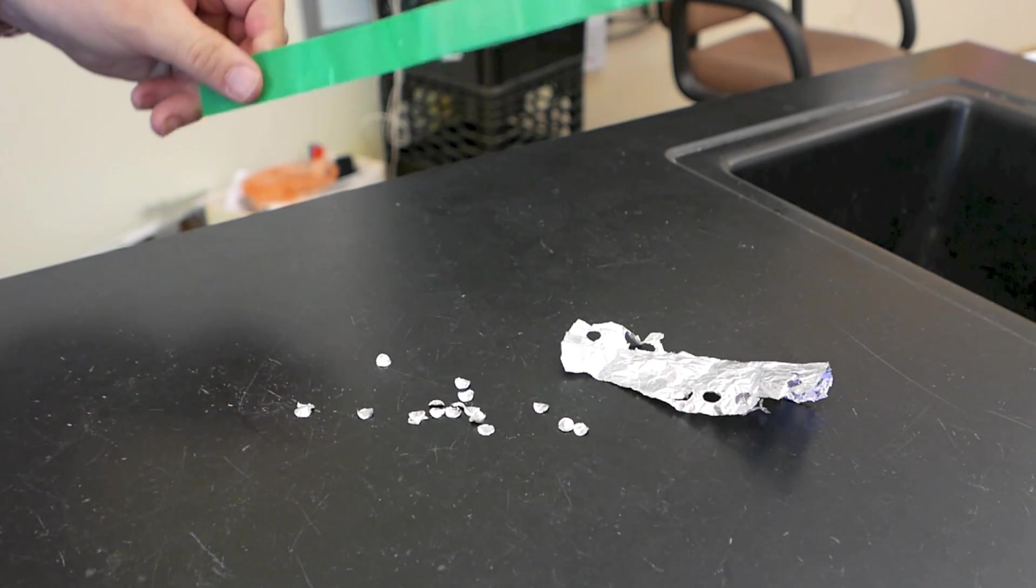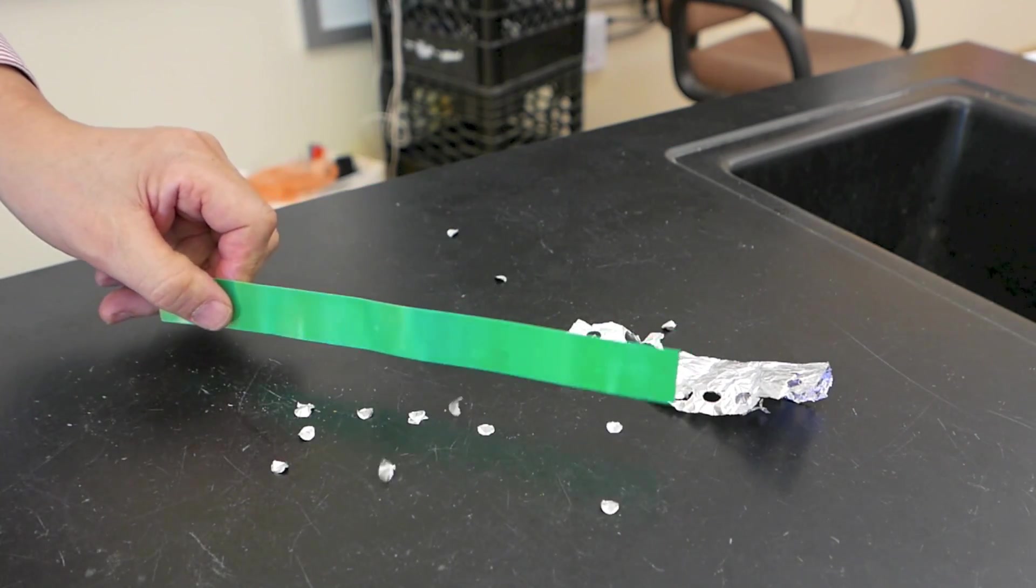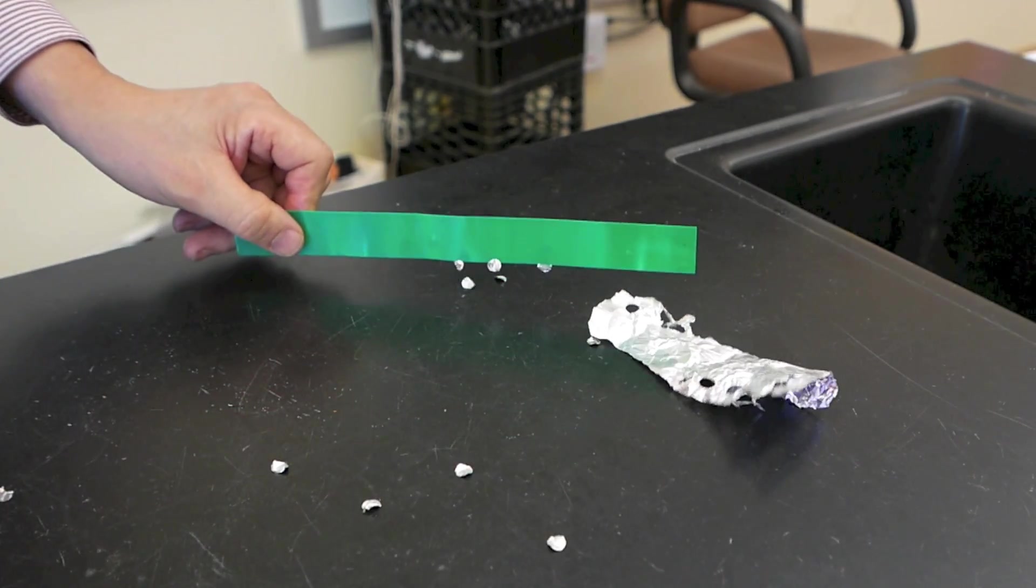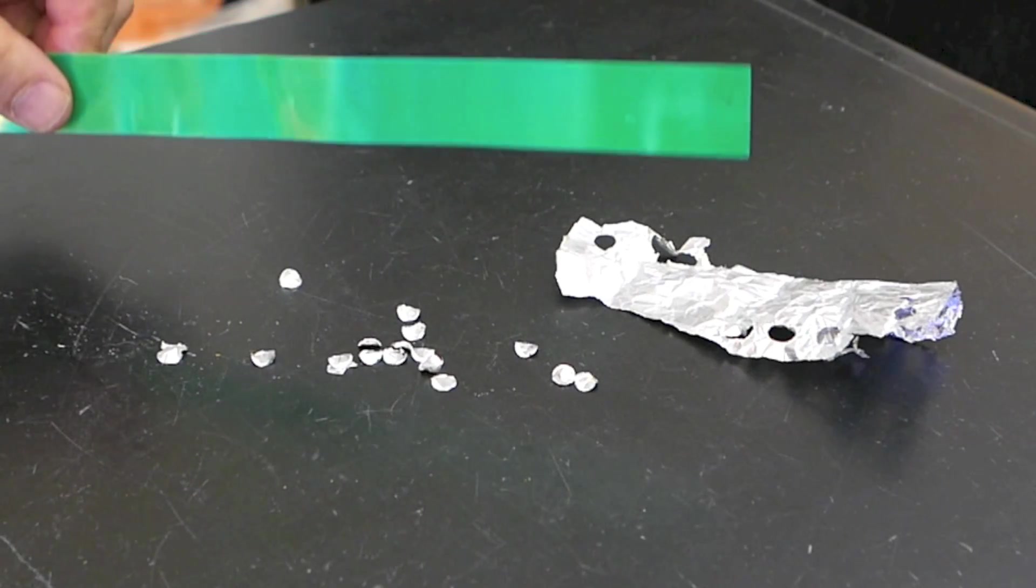Here we have induction and then conduction on a small scale with aluminum foil pieces. Let's see that again in slow motion.